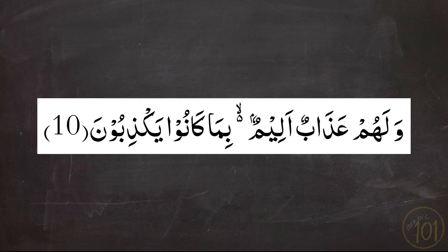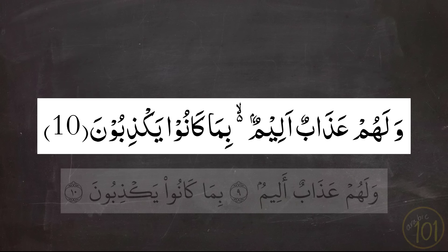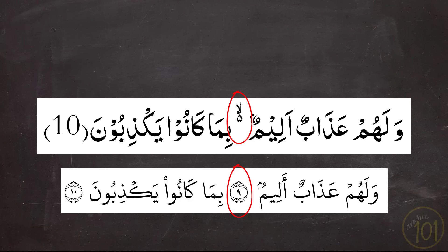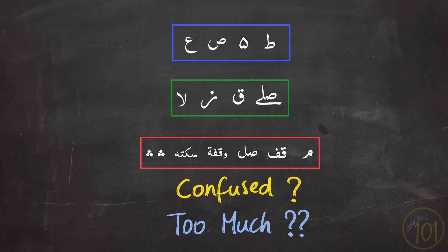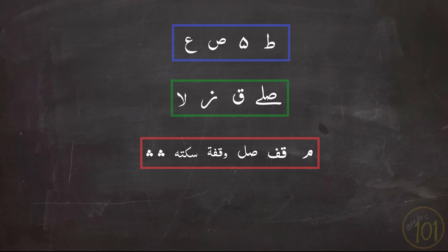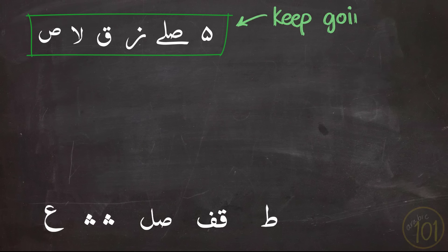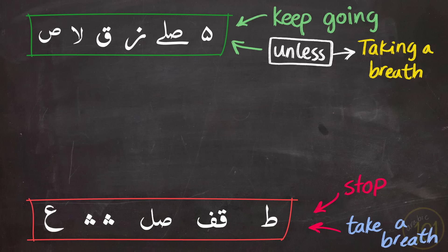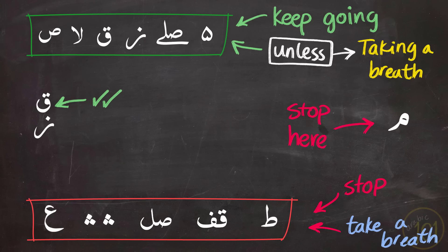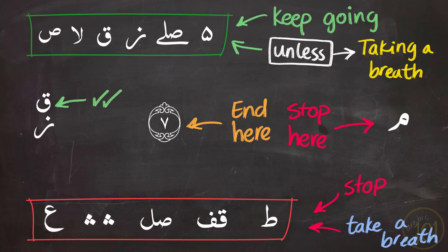Here is another example: you shouldn't stop and should keep on reading since there is the La symbol, but that spot is an ayah elsewhere, so stopping is not prohibited — just not the best choice. For those still confused, here is the easy way to deal with all of them: if you see the go-category symbols, keep going unless you need a breath. If you see stop-category symbols, stop and take a breath. If symbols are stacked, follow the one on top. Always stop at the Meem symbol, and always end your recitation at the end of an ayah unless it ends with a La symbol.